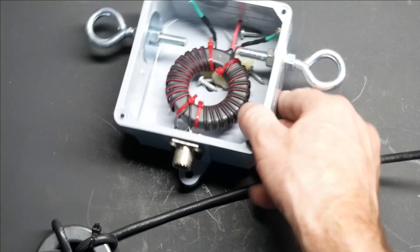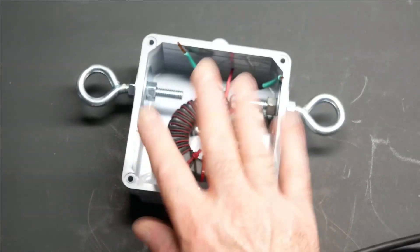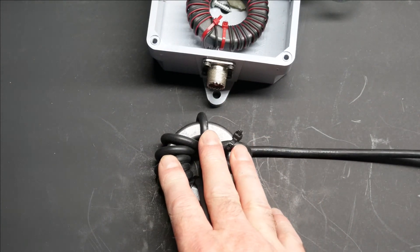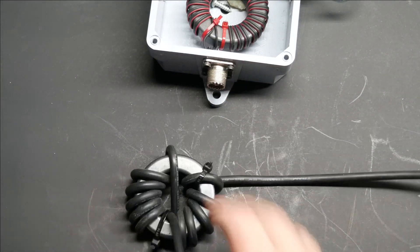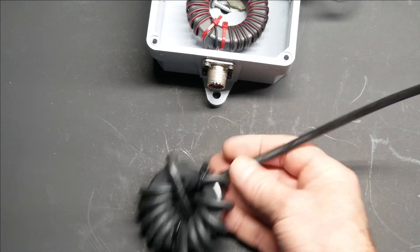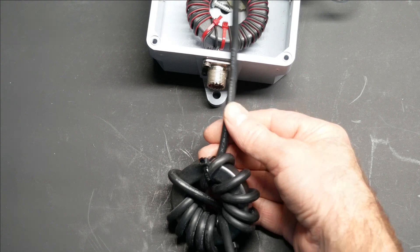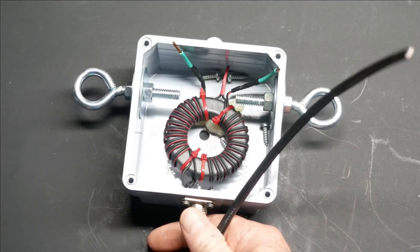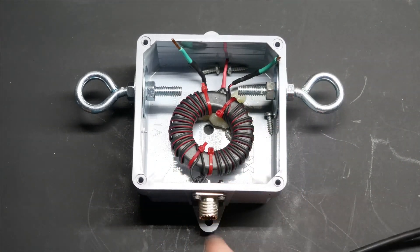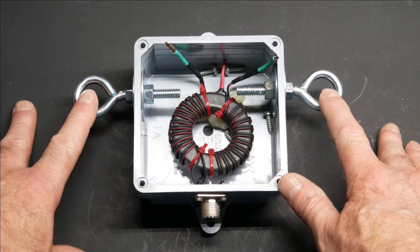So you need both of these because this gives us common mode suppression, and this gives us four to one transformation. So this will prevent common mode current from going down the outside of the coax shield, but it's still a one to one transformer. Really, it's just a choke, but it does help balance the current coming out of the coax. And then it goes into the four to one, and we get our four to one impedance transformation out of here. So we'll go in at 50 ohms, and then we come out to our antenna, which is an off-center fed dipole at 200 ohms.